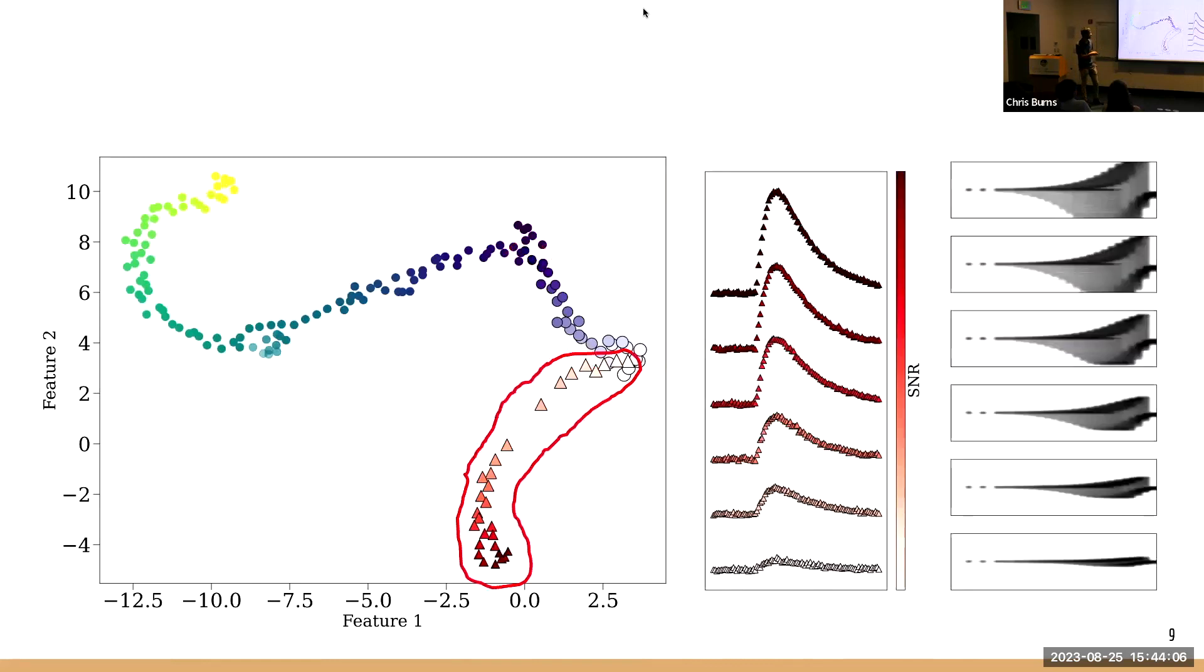And then lastly, let's take a look at a completely different type of light curve, one that could model an explosive event like a supernova, for example. And we see something very similar with the lighter points and how when we have more and more noise, they are farther away from our main cluster defining that class of light curve.